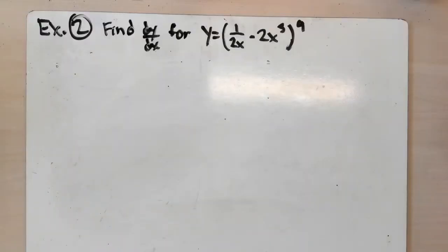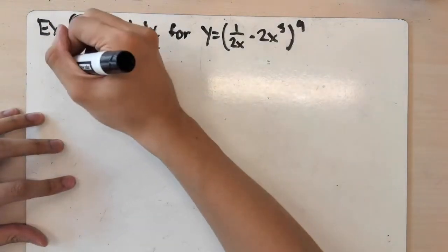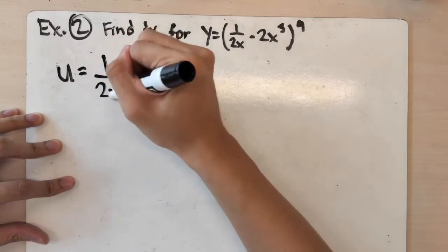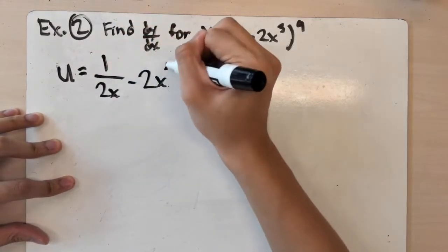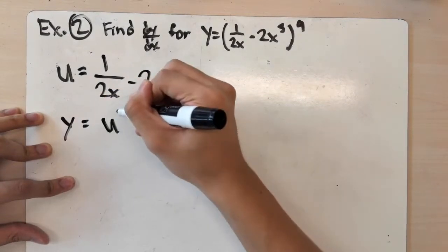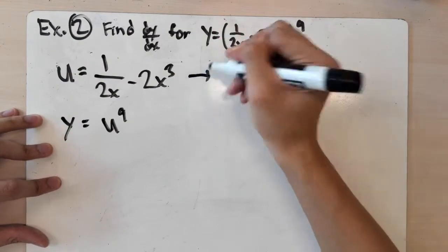For the second example, we have to find the derivative of y equals (1 over 2x minus 2x cubed) to the 9th power. Pause the video and try it yourself. We'll apply the same strategy: let the inner function u equal 1 over 2x minus 2x cubed, and let the outer function y equal u to the 9th.